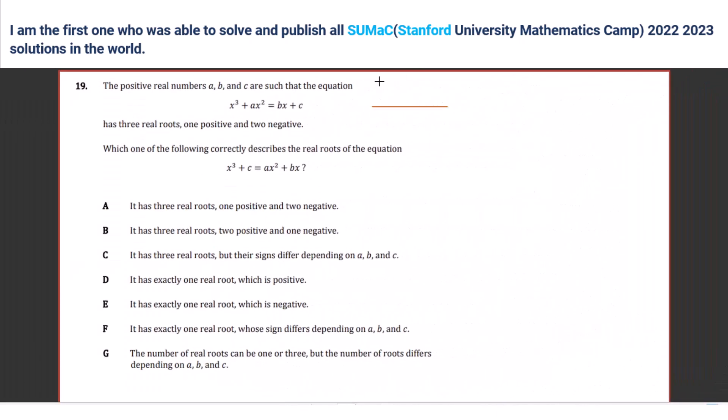So this one is something like this, right? x cubed plus ax squared minus bx minus c. It says it has three real roots, one positive and two negatives. Okay, these two are negatives, this one is positive.